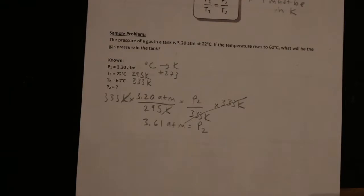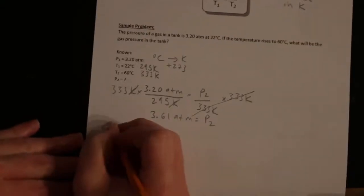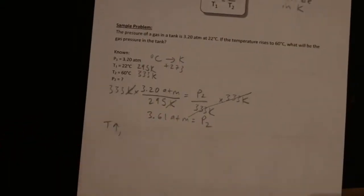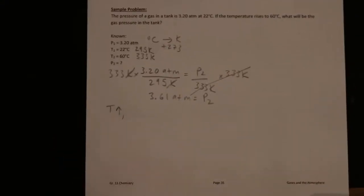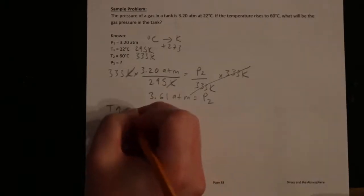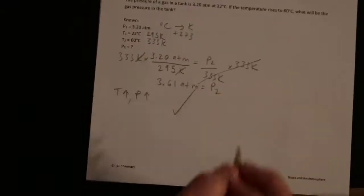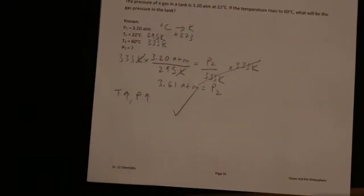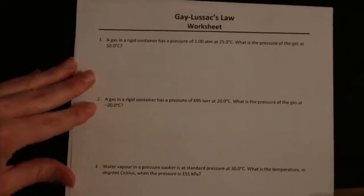Let's make sure our answer makes sense. The initial temperature was 22 degrees Celsius. The final temperature was 60 degrees Celsius. So temperature went up. According to Gay-Lussac's law, you would expect the pressure to go up as well. P1 was 3.2 atm, and we're saying that P2 is 3.6 atm. So pressure went up as well. It makes sense. Always do that common sense check at the end. That way you can clearly see if you made a mistake anywhere.